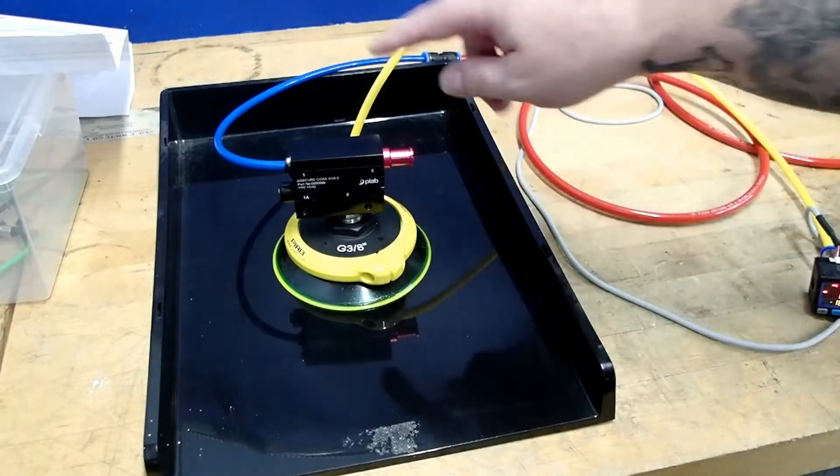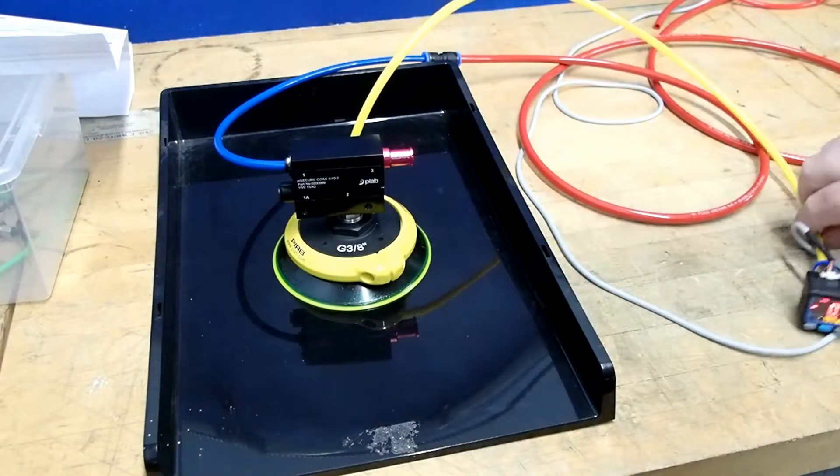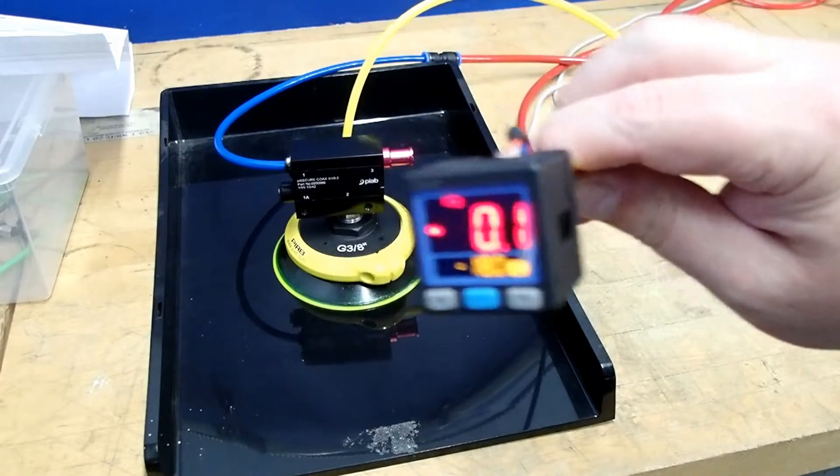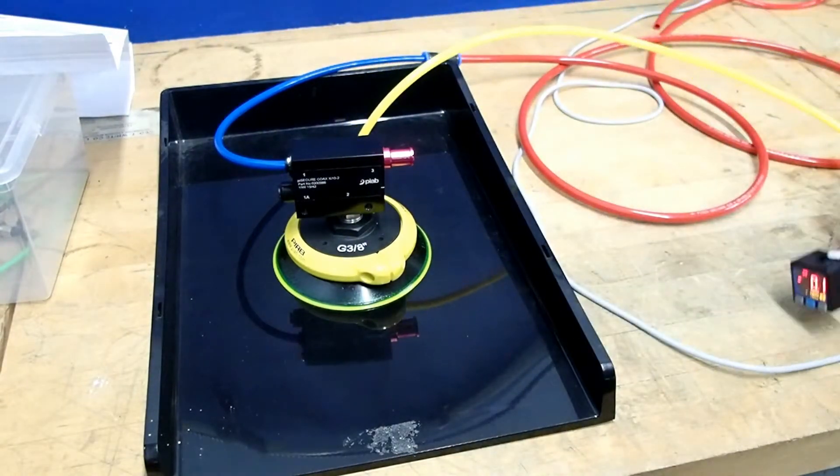So we're not taking advantage of the sensing port. We actually have our sensing port right on the cup, and we have ours attached to a digital vacuum gauge so we can show the unit in operation.